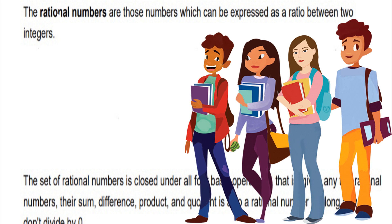The rational numbers are those numbers which can be expressed as a ratio between two integers. The set of rational numbers is closed under all four basic operations. That is, given any two rational numbers, their sum, difference, product and quotient is also a rational number, as long as we do not divide by zero.